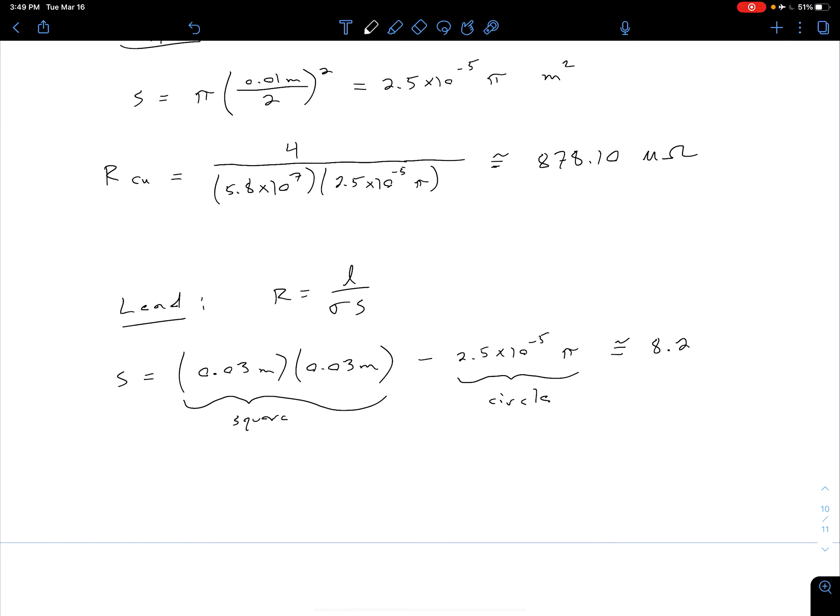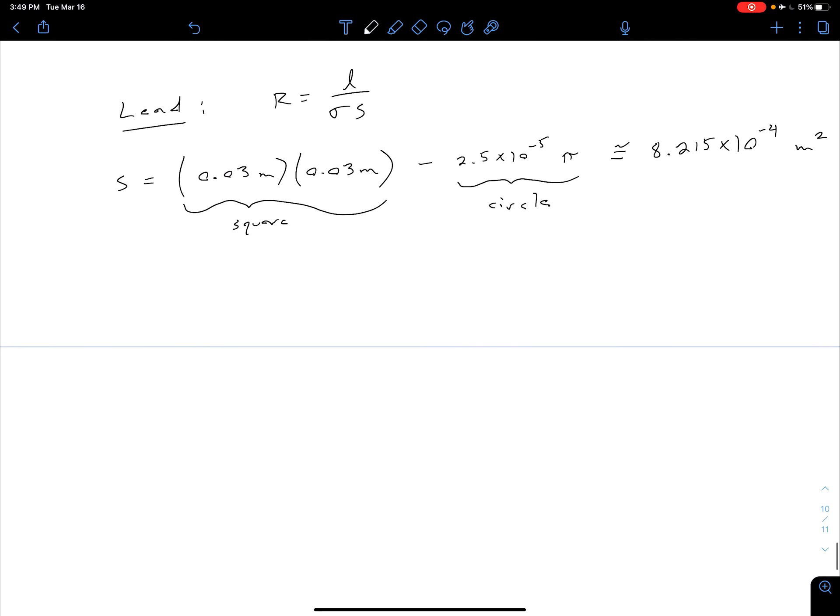Square minus the circle gives us our overall cross-sectional area of the lead region, which ends up being about 8.215 times 10 to the minus 4th meters squared. Now we just plug into that general equation for R. The resistance of our lead region is going to be approximately equal to the length of 4 in the numerator, our conductivity of lead is 5 times 10 to the 6th Siemens per meter.